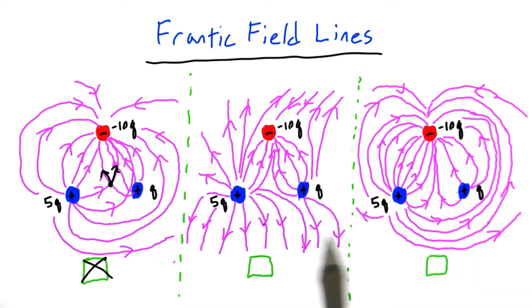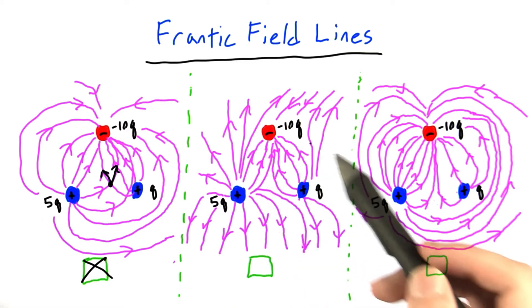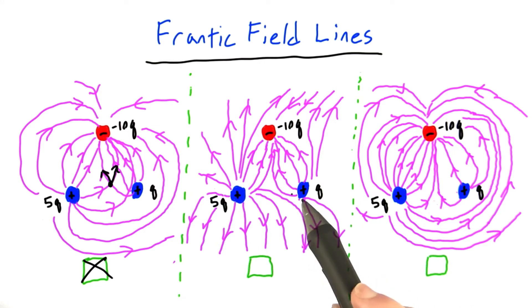Now this one looks a little better. It doesn't look like there are any lines that intersect each other, so we don't have any contradictions of the field pushing in two different directions at once. There are still some odd things happening in this diagram, though. In particular,